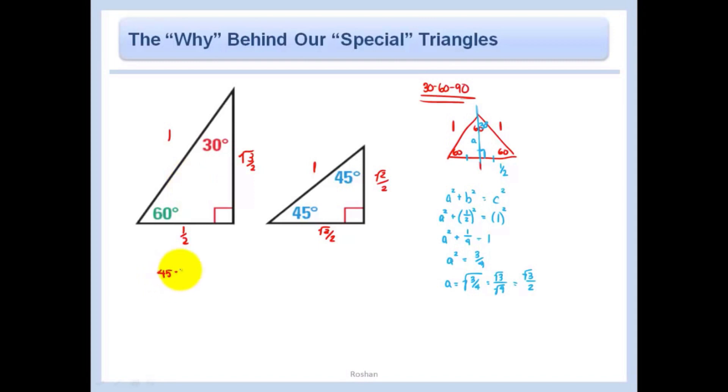Our 45, 45, 90 is even easier. So in this case, we know this is 1, this is 45, and this is 45. Since these angles are equal, then their side lengths must also be equal.